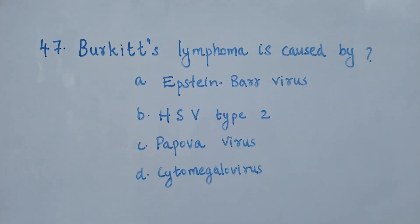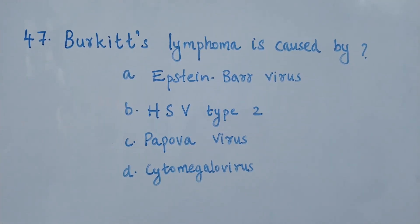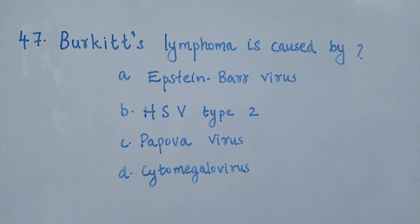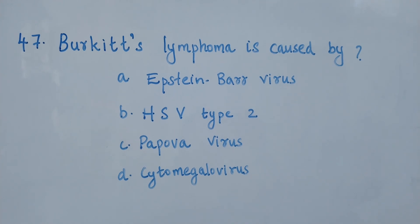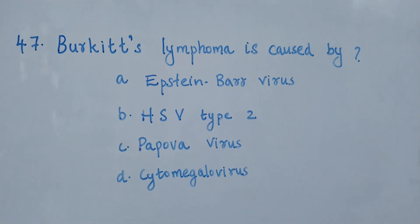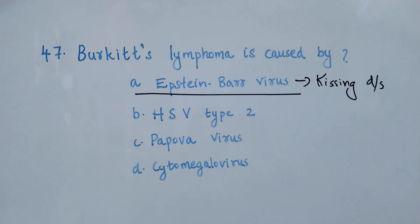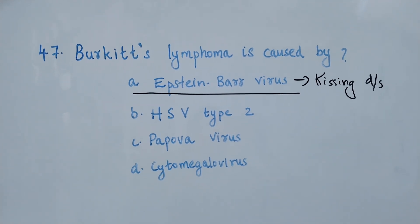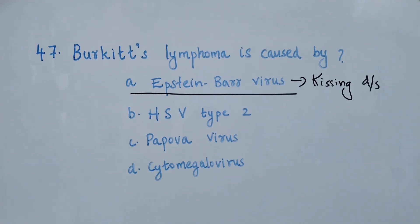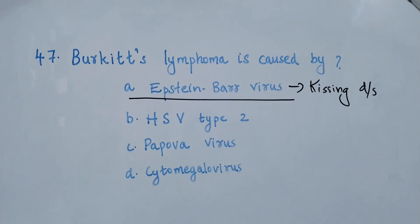Question number 47. Burkitt's lymphoma is caused by: option A, Epstein-Barr virus; option B, HSV type 2; option C, Papova virus; option D, Cytomegalovirus. The right answer is option A, Epstein-Barr virus. Burkitt's lymphoma is caused by Epstein-Barr virus, and kissing disease is also caused by Epstein-Barr virus. This is a common question asked in laboratory technician exams, so please note it down.